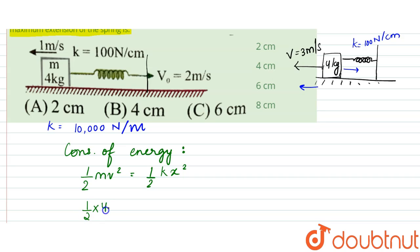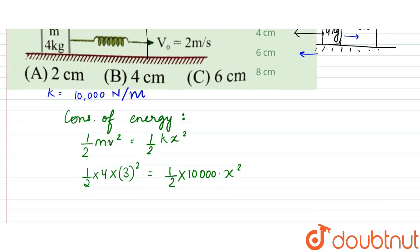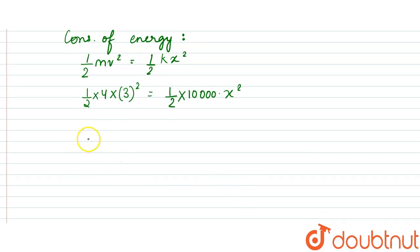Since the mass is 4 into v is 3 meter per second so that is 3 square, that would be equal to half k that is 10,000 into x square. According to this, this half half gets cancelled. So x square would be equal to 4 divided by 10,000 into 3 square.